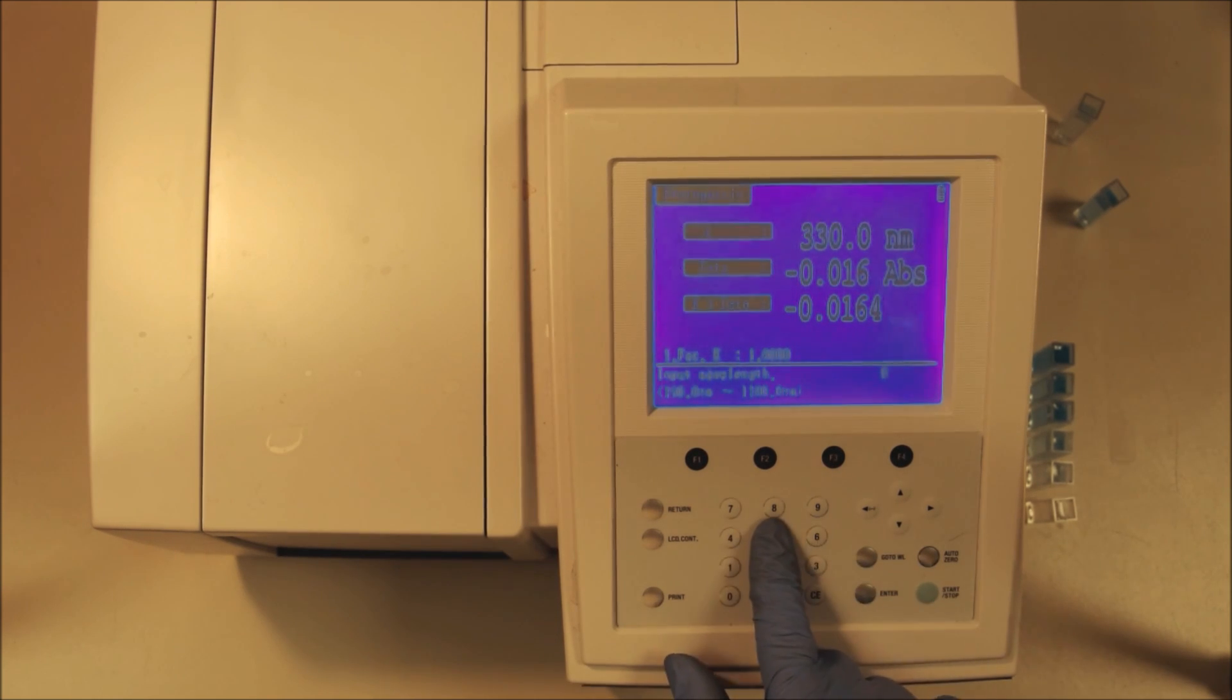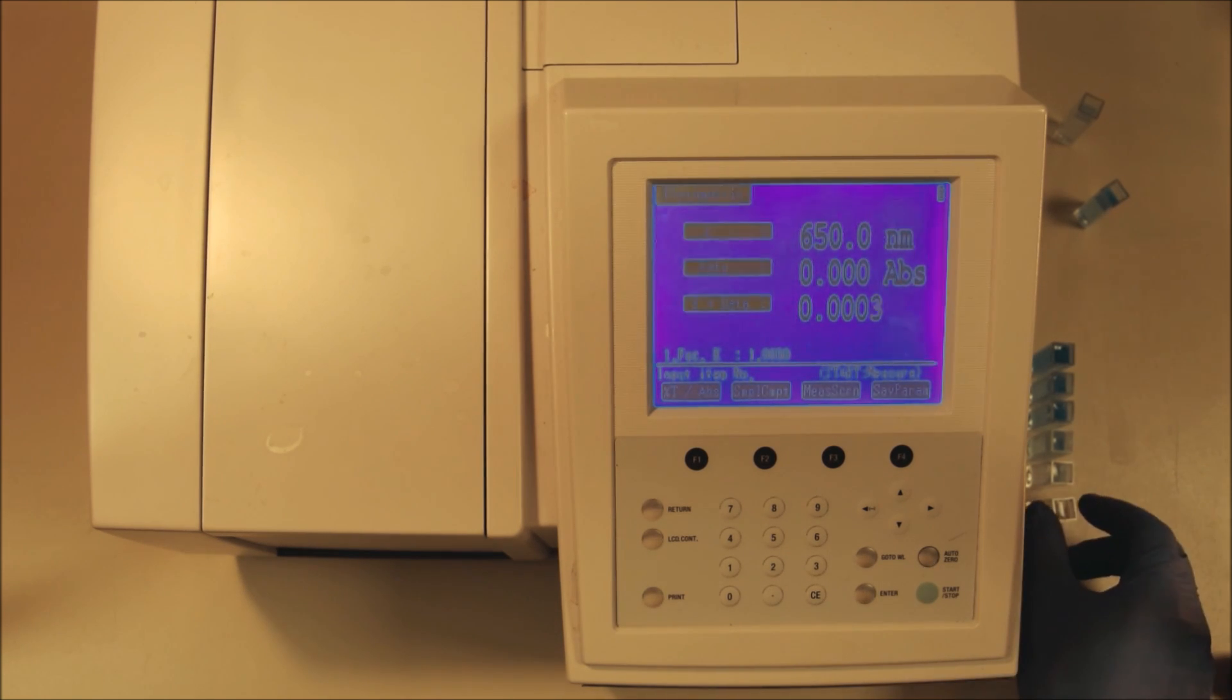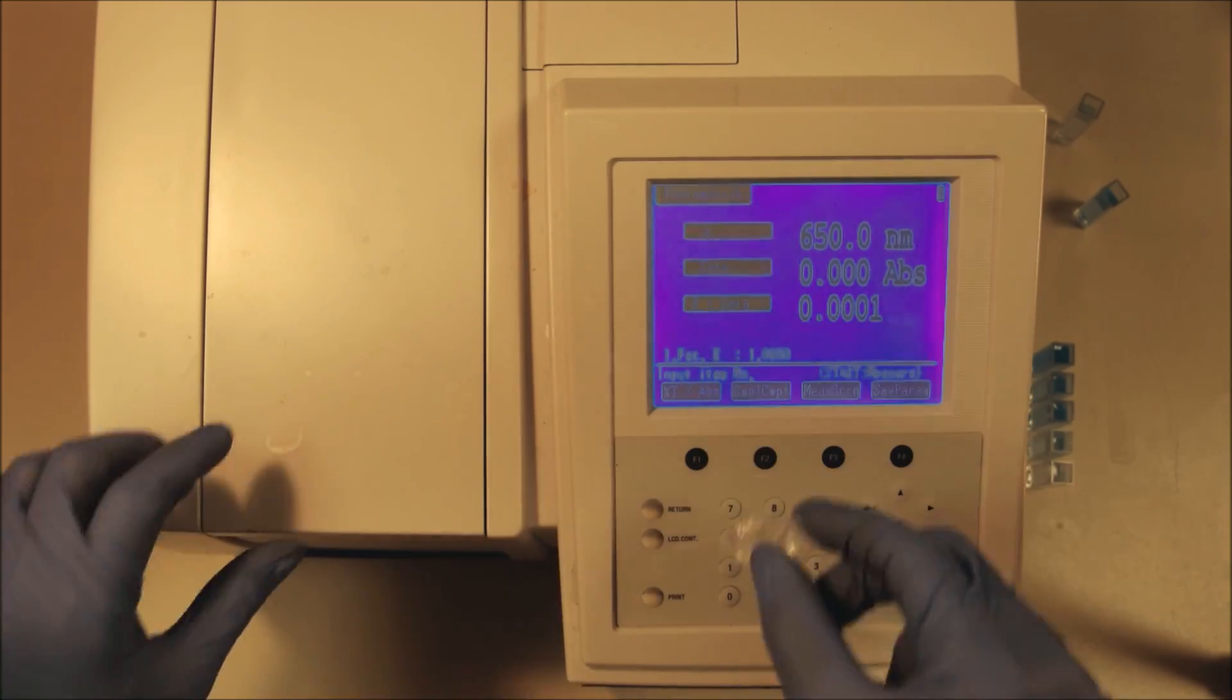Then what we need to do is choose the wavelength that we want to measure at. 650 nanometers, so we put that in by saying go to wavelength 650 enter. We'll come back to why we're going to use 650 nanometers later. In the meantime let's get on with setting up the machine.